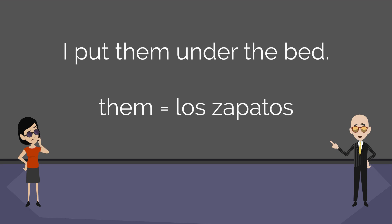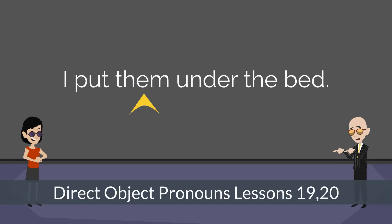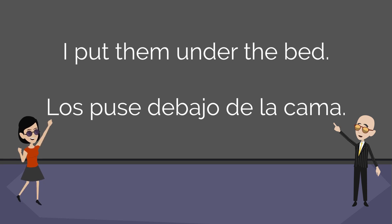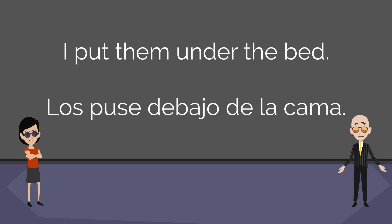Now it's your turn. Let's say you want to translate this sentence: 'I put them under the bed.' Hopefully you've been following my recommendation and taken all previous lessons in order — if you have, this sentence isn't that tough. 'Them' is referring to shoes, that's a direct object pronoun you learned about back in lessons 19 and 20. 'Under the bed' — if you paid attention back in lesson 21 when I covered spatial relationships, this shouldn't be a problem. Let's put it all together and translate: 'I put them under the bed.'